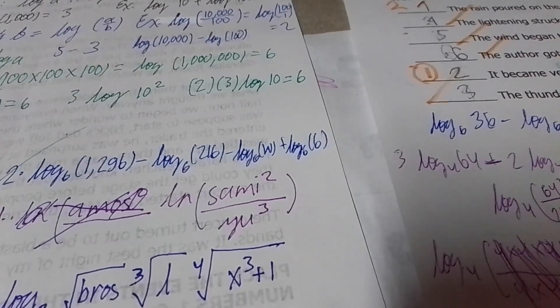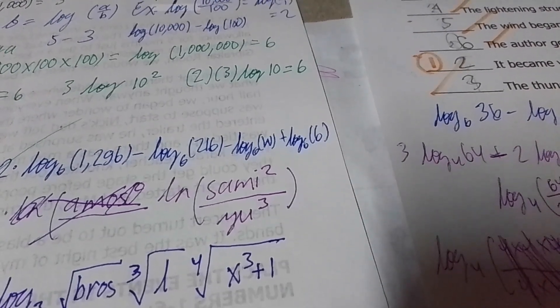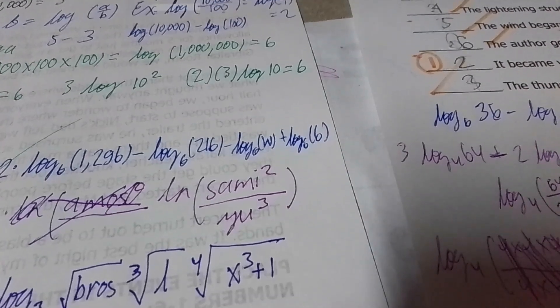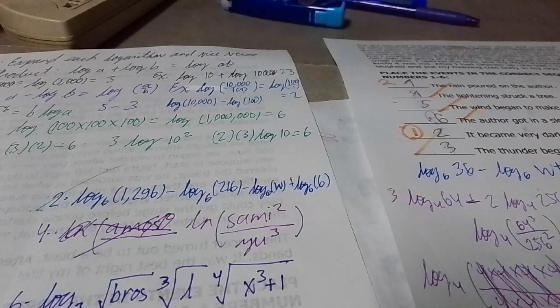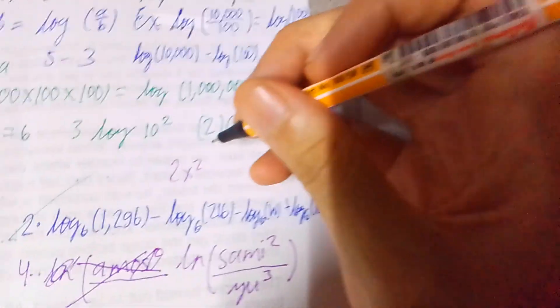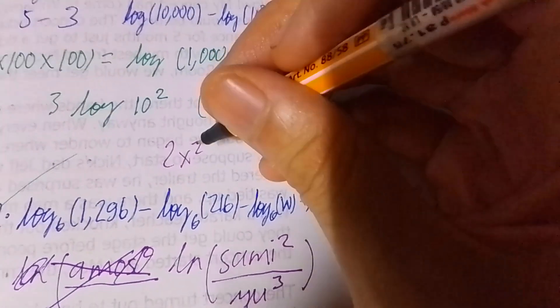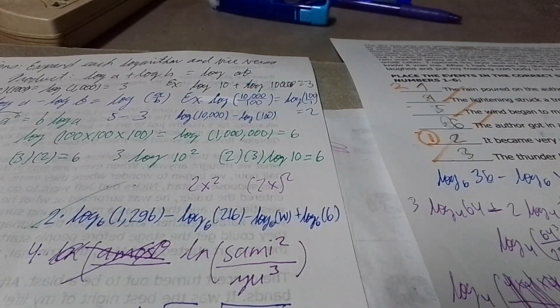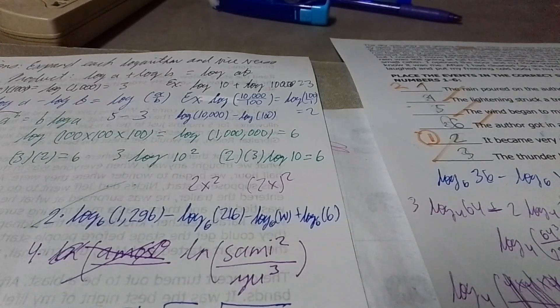Be careful: the squared exponent refers only to the letter I, not to all of SAMI. Just like in algebra, 2X squared means the square applies only to X. Unless SAMI were inside parentheses as (SAMI)², only the last letter I is being raised to the power of 2.